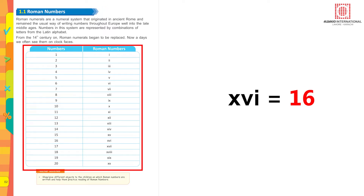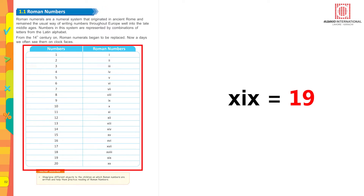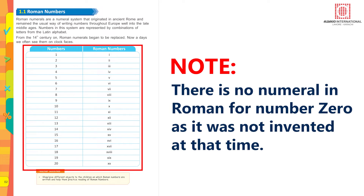XV is equal to 15. XVI is equal to 16. XVII is equal to 17. XVIII is equal to 18. For 19, XIX is equal to 19. To write 20, XX — two times X is equal to 20. There is an interesting fact I want to share with you: there is no numeral in Roman for the number 0.